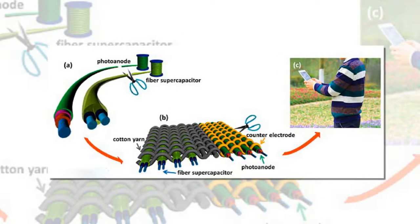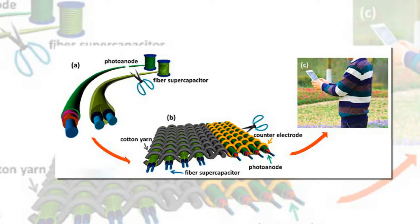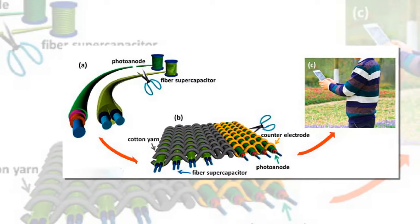Researchers are giving a whole new meaning to power dressing with the invention of smart clothes that use the sun's rays to charge devices.